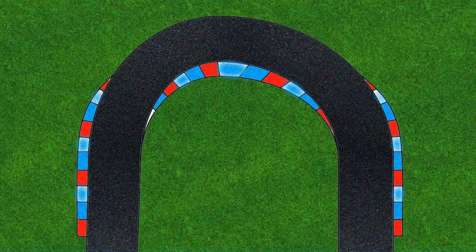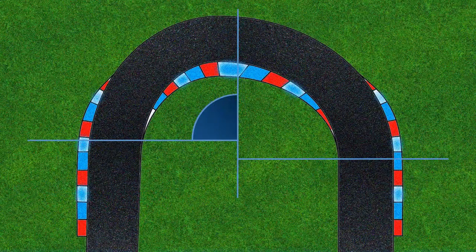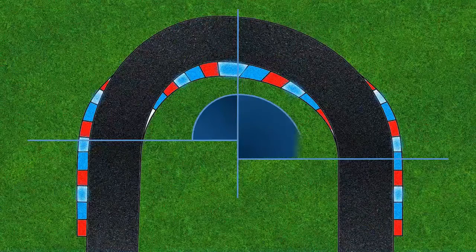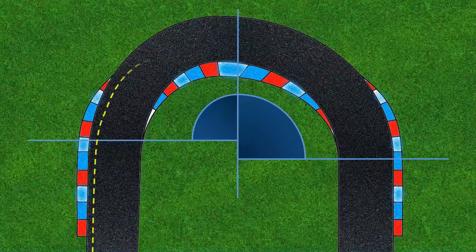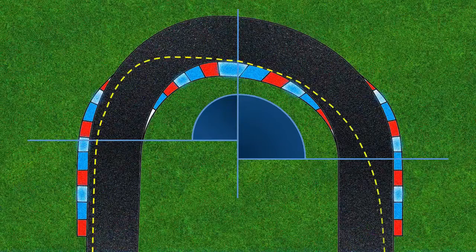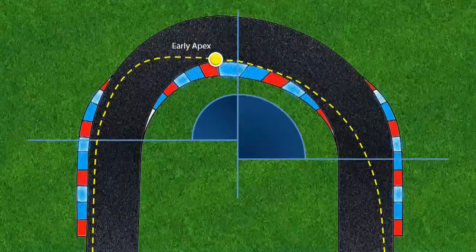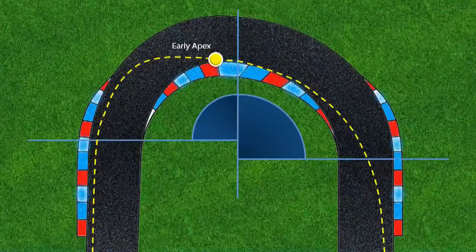As the name suggests, an increasing radius corner is one where it starts with a smaller radius, going into a larger radius as the corner progresses. Riders can hit the apex before the midpoint of the corner, allowing for faster exit speeds. They're arguably the easiest of corners to navigate. So, let's take a look at how you can identify an increasing radius corner on an unfamiliar road.